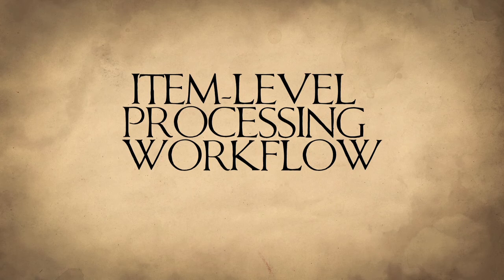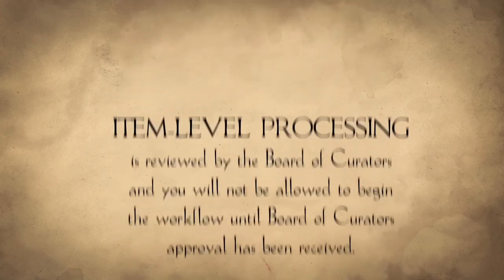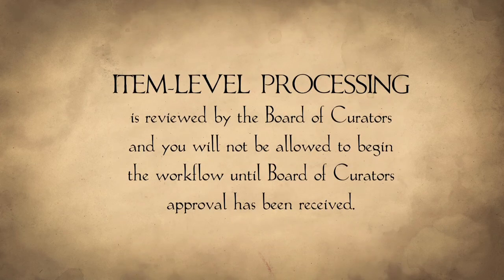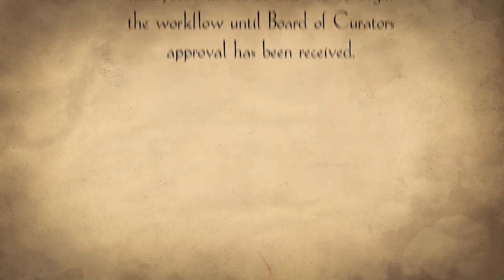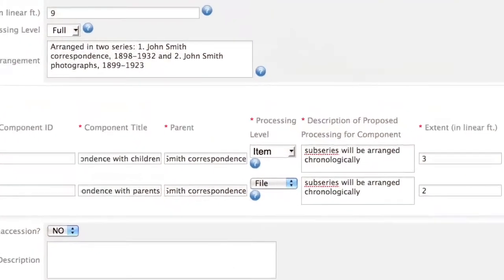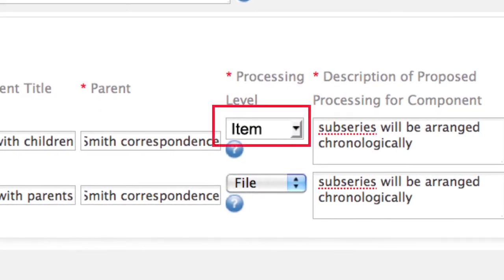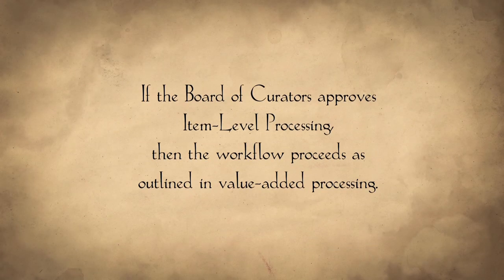The final workflow we will examine is the Item Level Processing workflow. This workflow follows the same procedures as the Value Added Processing workflow with one exception. Item Level Processing is reviewed by the Board of Curators, and you will not be allowed to begin the workflow until the Board of Curators approval has been received. Board of Curators review is triggered when you indicate that materials will be item level processed in the Processing Plan. If the Board of Curators approves item level processing, then the workflow proceeds as outlined in Value Added Processing.